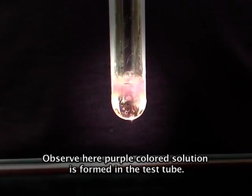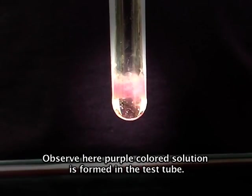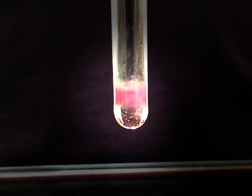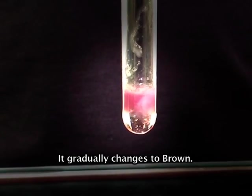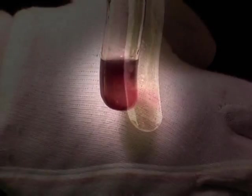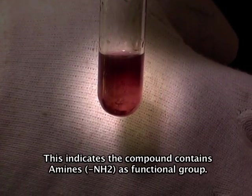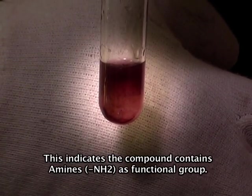Observe that a purple colored solution forms in the test tube. It gradually changes to brown. This indicates the compound contains amines as a functional group.